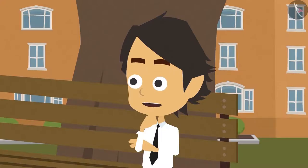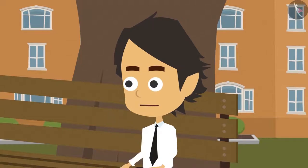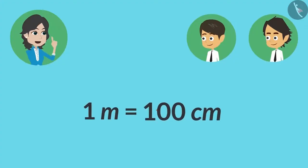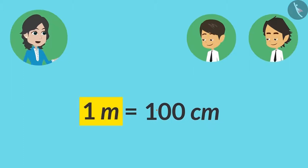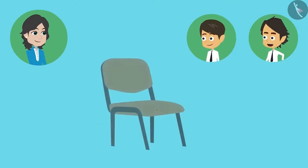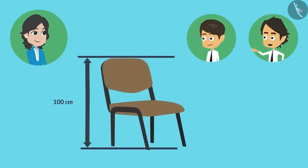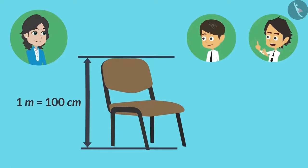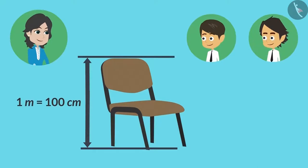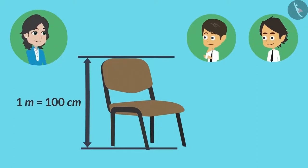Why only bigger than 100 centimeters? Why not smaller than that? Because 1 meter has 100 centimeters. Or we can also say that 1 meter is equal to 100 centimeters. Which means if the length of an object is 100 centimeters, then we can say that the object is 1 meter long.